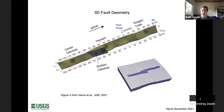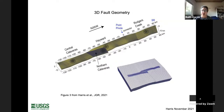Our 3D fault geometry includes the Rogers Creek, connector, Hayward, central Calaveras, and northern Calaveras faults. Point Pinole (labeled PP) serves as the zero reference point in our model and marks the location of a fault bend. The branch to the northern Calaveras makes the geometry more complicated and harder for ruptures to propagate. Our 3D finite element mesh has about 60 million elements. We nucleate earthquakes on all four faults — Rogers Creek, Hayward, central Calaveras, and northern Calaveras.